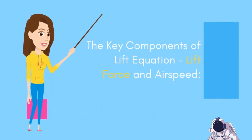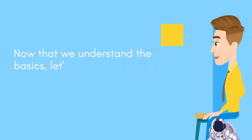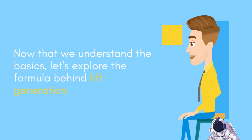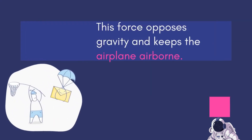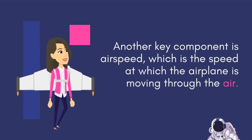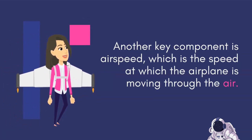The key components of the lift equation: lift force and airspeed. Now that we understand the basics, let's explore the formula behind lift generation. Lift force is a crucial aspect of flight, generated due to the pressure difference between the top and bottom surfaces of the wings. This force opposes gravity and keeps the airplane airborne. Another key component is airspeed, which is the speed at which the airplane is moving through the air.